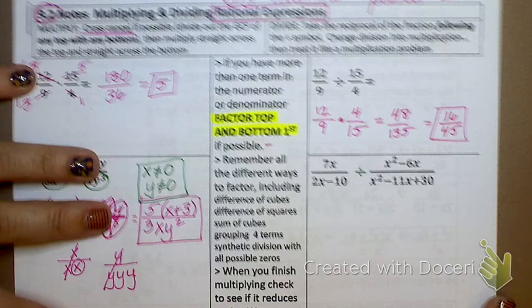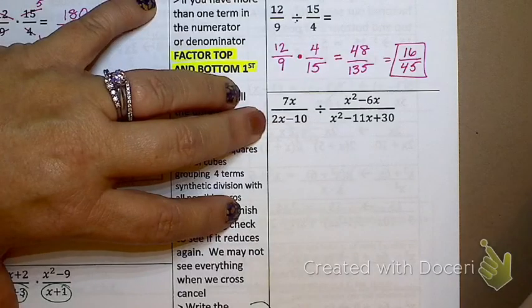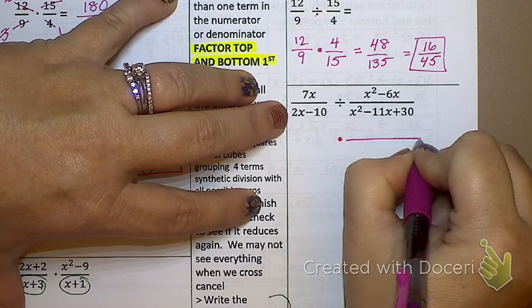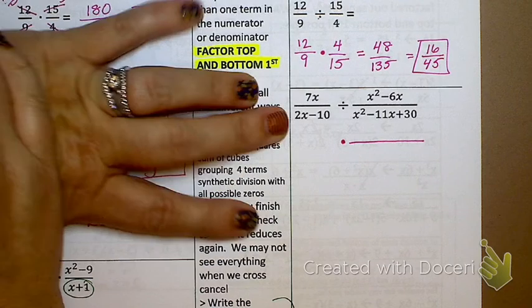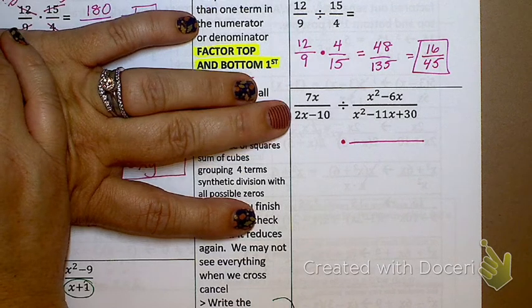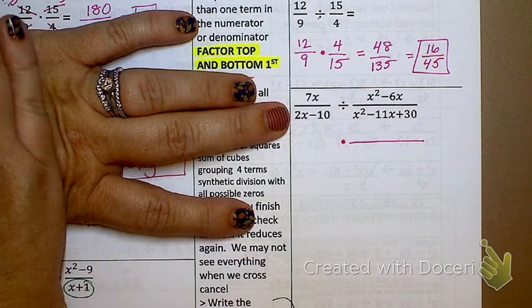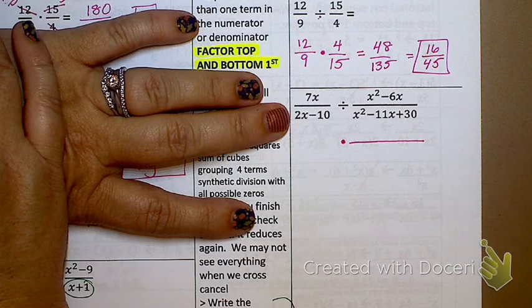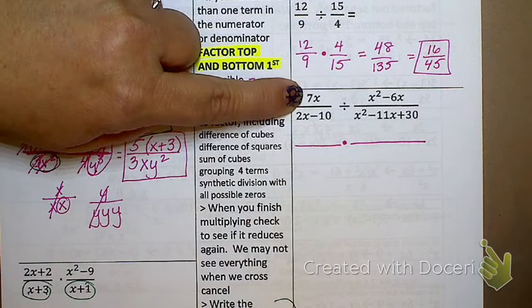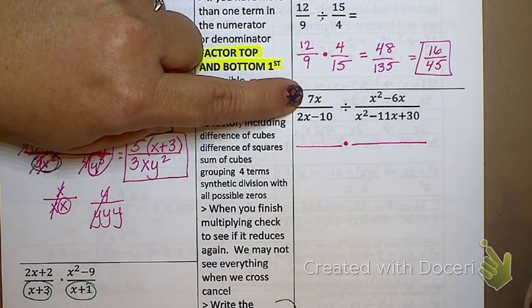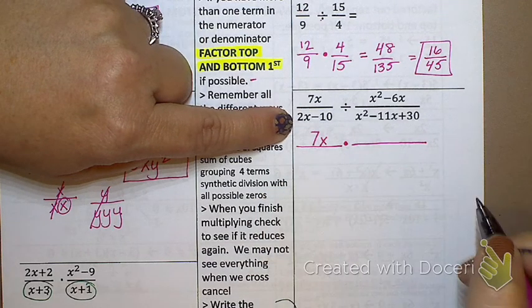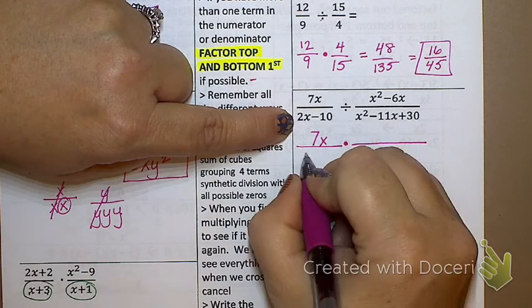Let's look at this one. I have division which means I'm going to need to do what? Change it to multiplication and do what over here? Flip it? Now, I, like most American high school students, am lazy and I don't want to have to write this twice. So if it's okay with you, I am going to factor and flip in the same step. Is that okay? All right. So can I factor 7x? No. Why not? Monomial. So it's going to stay there. Can I factor 2x minus 10? What do I do? Take out a 2 and I'm left with x minus 5.